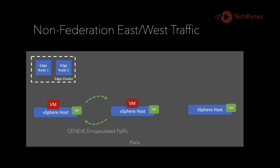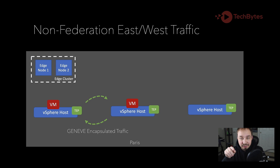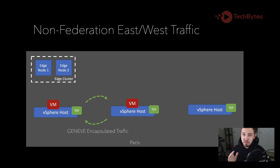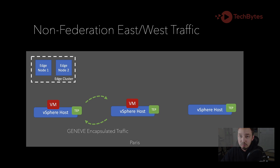The return path is exactly the same. Keep in mind, the point here is there's no involvement of the edge nodes. Big caveat: the edge nodes would be involved if we're doing any kind of stateful services like NAT, for example — there are scenarios where traffic would go to the edge cluster first before coming down to this host. So it just depends on your situation, but just normal east-west, this is what it looks like.